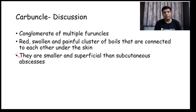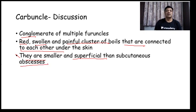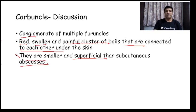Carbuncle is a conglomerate of multiple furuncles. Clinically it is seen as a red, swollen, painful cluster of boils — furuncles connected to each other under the skin. They are smaller and more superficial than subcutaneous abscesses. So folliculitis leads to furuncle, and a conglomerate of furuncles forms carbuncle.